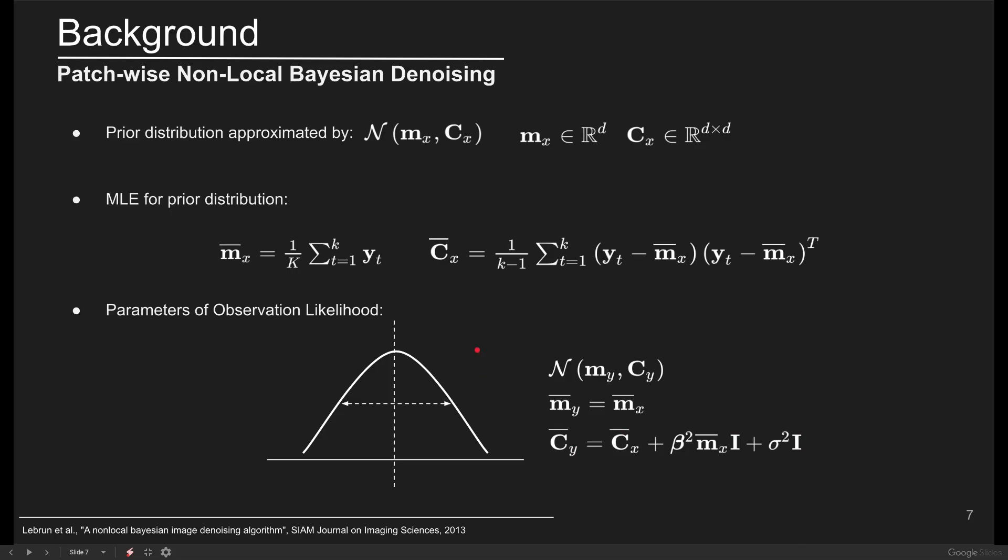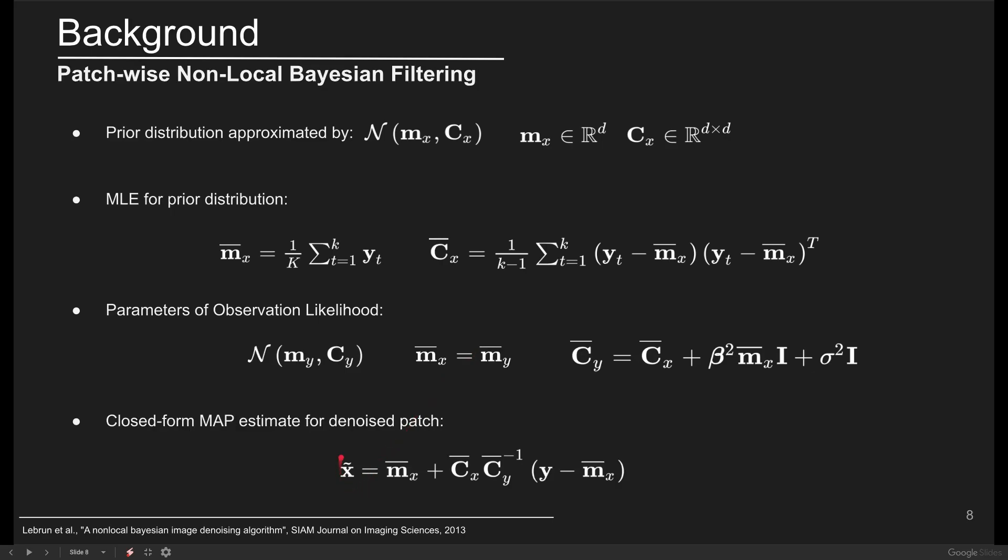More details about these equations can be found in the paper. Given these Gaussian models, the MAP estimates for the noise-free patch can be obtained using this closed form expression.